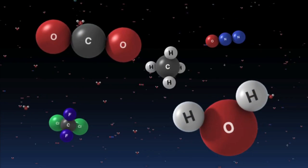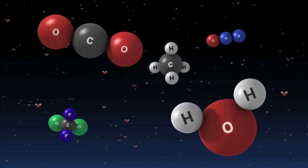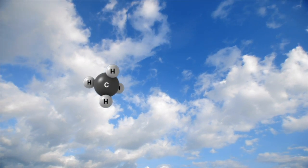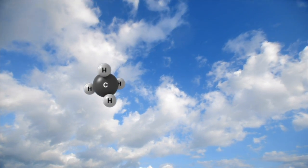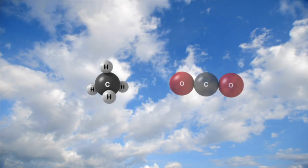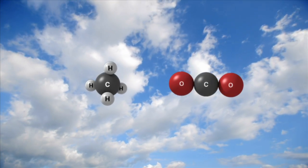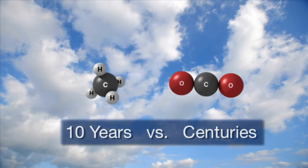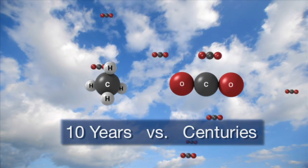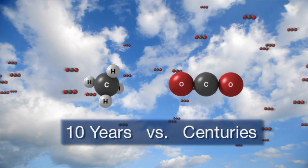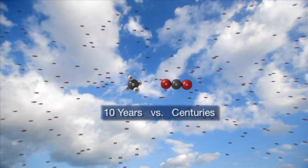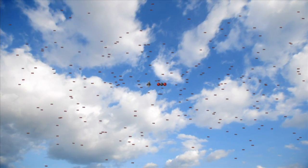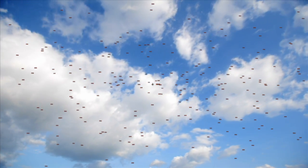Greenhouse gases differ in their forcing power. For example, a single methane molecule has about 25 times the warming power of a single CO2 molecule. However, methane has a shorter lifetime in the atmosphere and is less abundant, while CO2 has a larger warming effect because it is much more abundant and stays in the atmosphere for much longer periods of time.